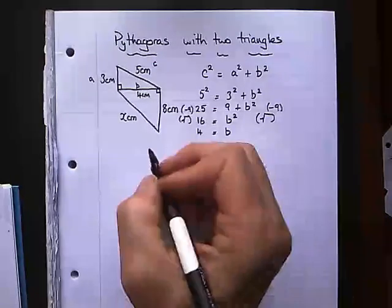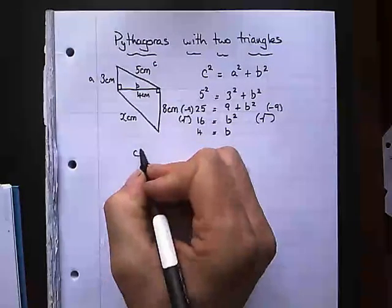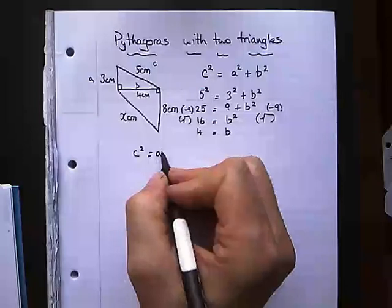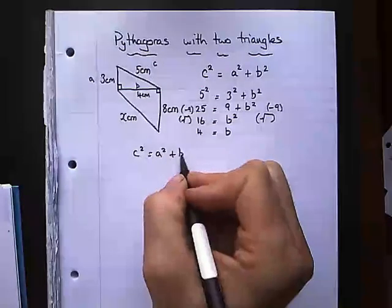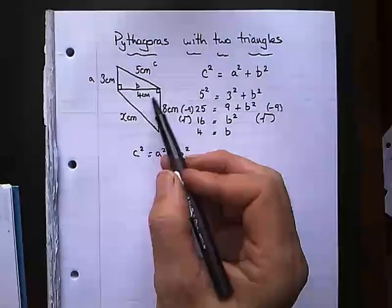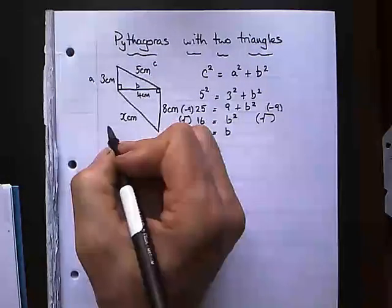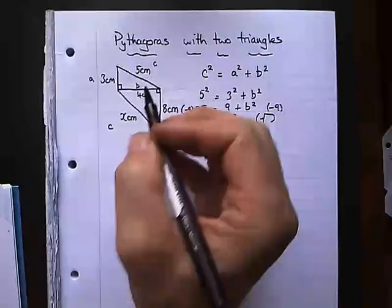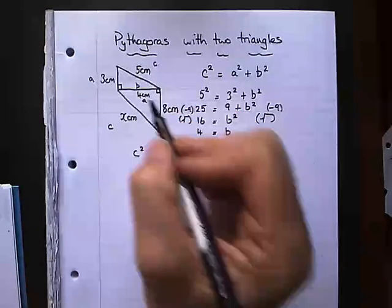So let's just write out the formula again. C squared equals A squared plus B squared. Let's label the sides. Which is the longest side? Well that's the one opposite the right angle. So that's C. Doesn't matter which way around we call these. Let's call A 4 and B 8.